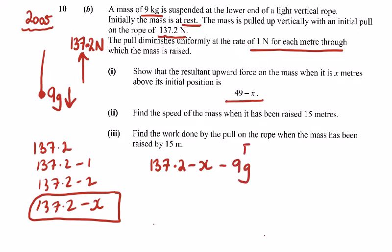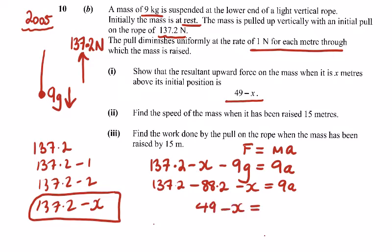The forces would be equal to ma, which we're also going to need in this question, that's going to be equal to 9a. So 137.2 minus 9.8 is 88.2 minus x equals 9a. 137 minus 88 is 49, so 49 minus x equals 9a.